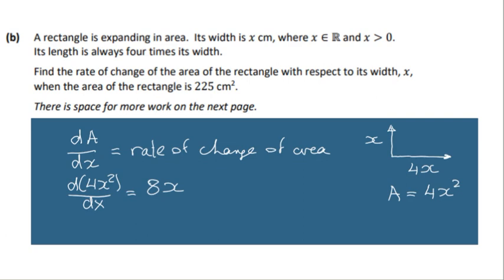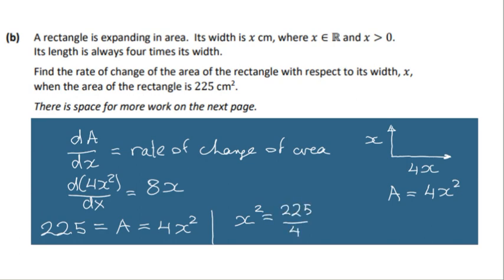This 225 is a specific value where we have a certain dimension of x. So 225 is equal to the area which is equal to 4x². Let's solve for x because we need the actual x value at the 225 area. So 4x² = 225, therefore x² = 225/4, and taking the square root of both sides we get x = 15/2.